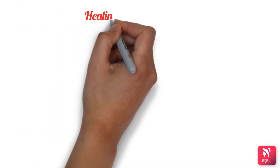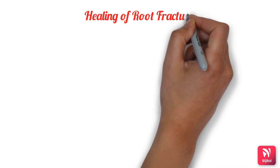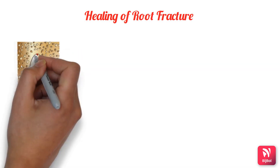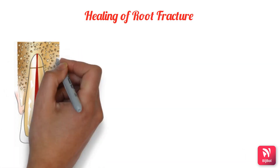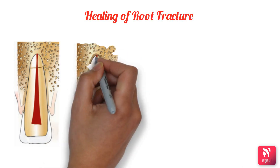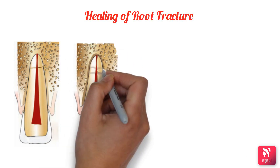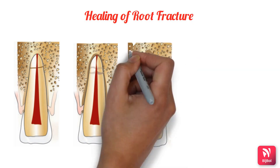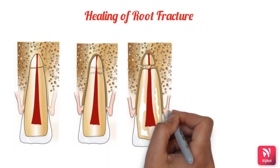According to Andreasen, root fractures can heal in four ways: healing with calcified tissues where fractured fragments are in close contact; healing with interproximal connective tissue where fragments appear separated by a radiolucent line; healing with interproximal bone and connective tissue where fragments are separated by a distinct bony bridge radiographically; and no healing with interproximal inflammatory tissue, showing widening of the fracture line radiographically.